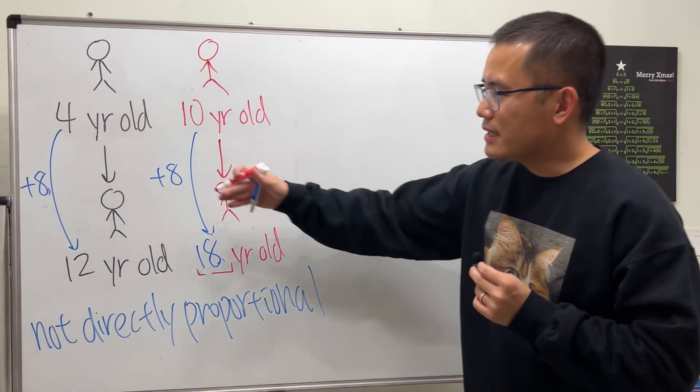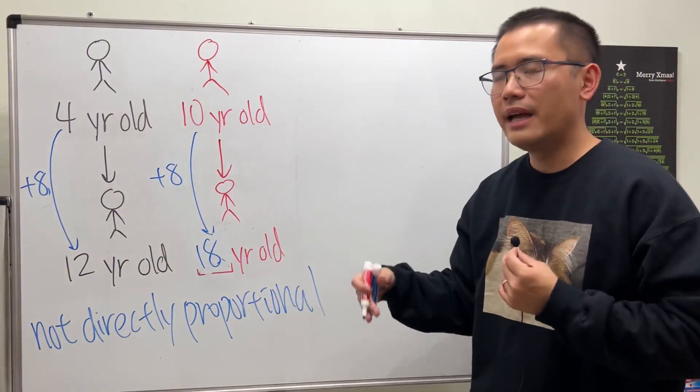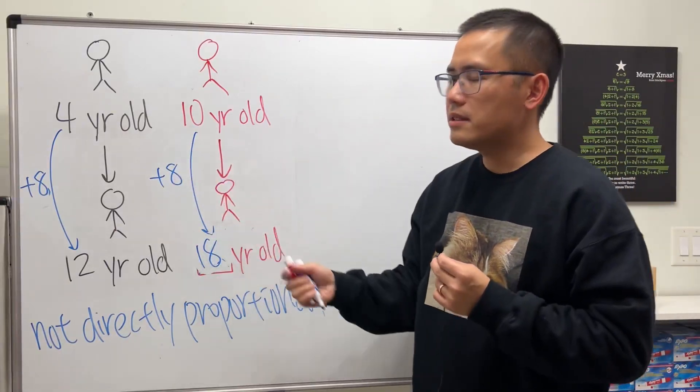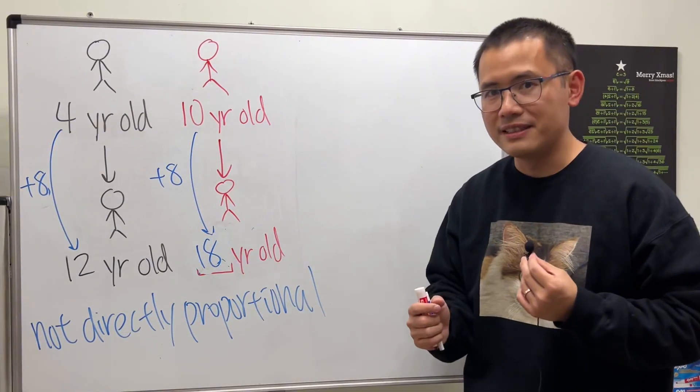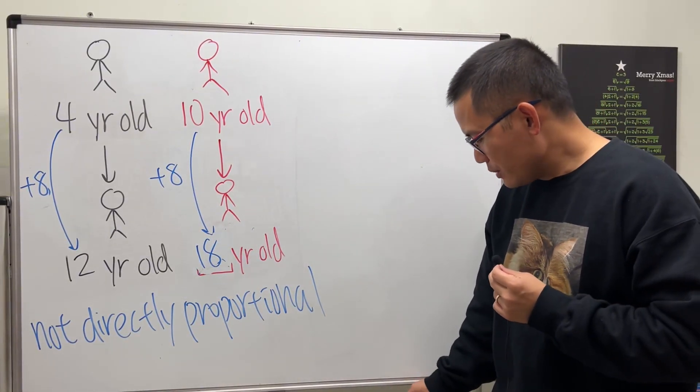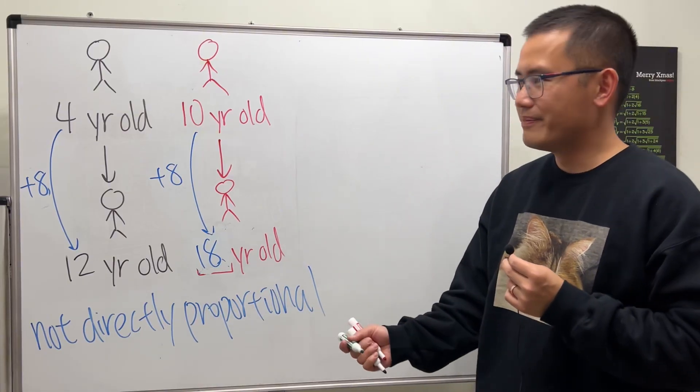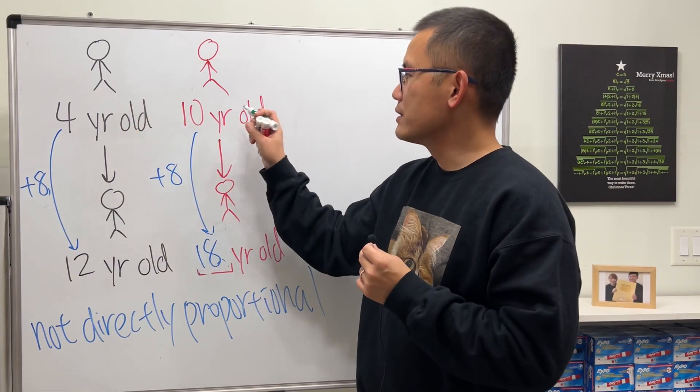So you can see that we're adding the same number throughout the process, and that means the quantities differ by a constant. And you can look at this question this way too.